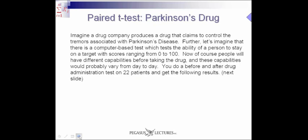Perhaps what will drive home this point is considering a drug for Parkinson's disease and the use of a paired t-test. Imagine that a drug company produces a drug that claims to control the tremors associated with Parkinson's disease. Further, imagine a computer-based test which tests the ability of a person to stay manually on a target, with scores ranging from 0 to 100. People have different capabilities before taking a drug, and these capabilities will probably vary from day to day. So you do a before and after drug administration test on 22 patients.